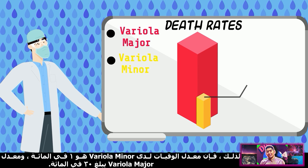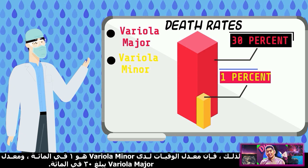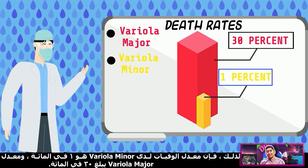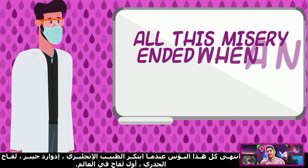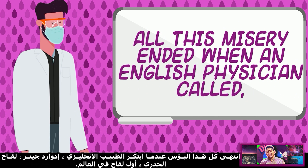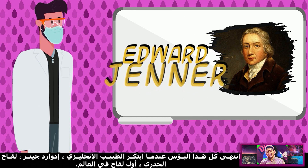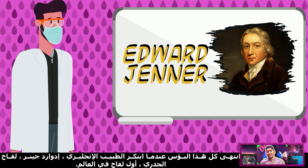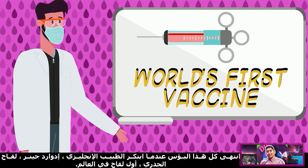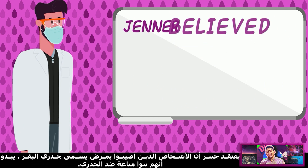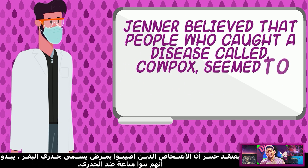As the virus took almost 300 to 500 million lives, variola minor has a mortality rate of 1% and variola major has a mortality rate of 30%. All this misery ended when an English physician called Edward Jenner created the smallpox vaccine — the world's first vaccine.